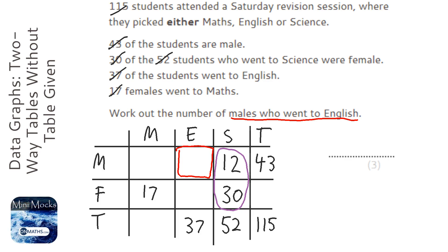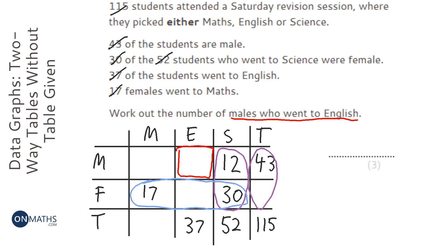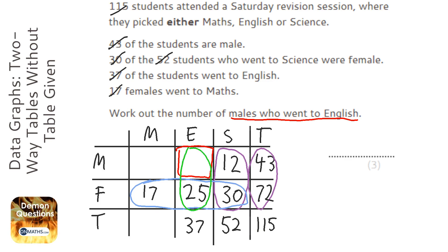So the male science cell, to make the total equal to 52, must be 22 minus 30... let me work through this. I need to find the female total: 115 take away 43 gives us 72. Then I do 72 take away 30, take away 17, which is 25 — so 25 females went to English. Then I know these two cells add together to make 37, so I do 37 take away 25, which is 12.